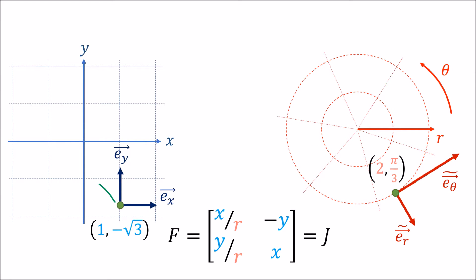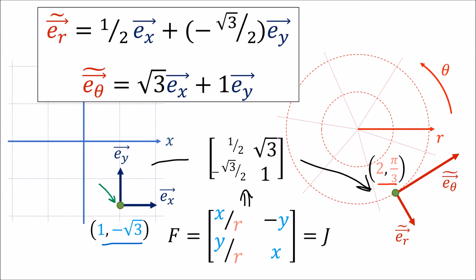Finally, there's this green point with Cartesian coordinates (1, −√3) and polar coordinates (2, π/3). When we plug in those coordinates into the Jacobian matrix, we get this matrix, which generates these forward transform equations. And once again, these numbers look about right.